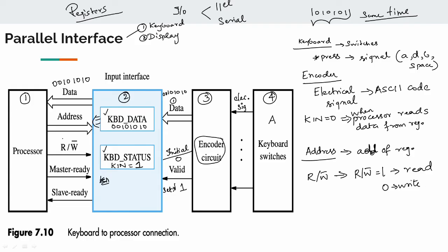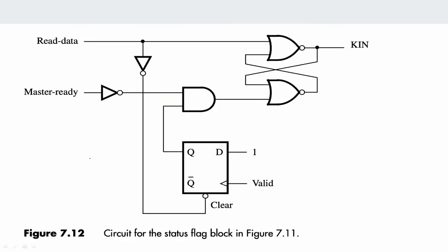Next, we have master ready and slave ready signals. Master ready signal indicates the processor is ready. Slave ready signal is from the input interface — it confirms the interface is ready using the data bus.